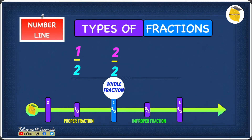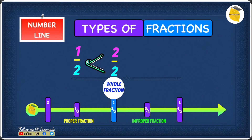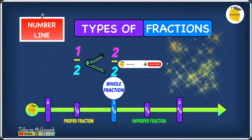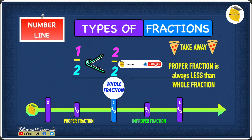Now we'll compare 1 over 2 to 2 over 2 to see which one is larger. We know that 1 over 2 is on the proper fraction and 2 over 2 is on the whole fraction. As we can see, the whole fraction is further up the number line than the proper fraction, so 1 over 2 is less than 2 over 2. The key takeaway is that a proper fraction is always less than a whole fraction.